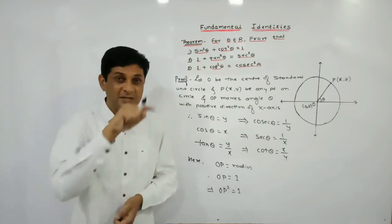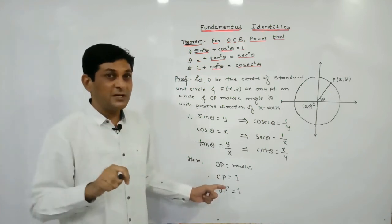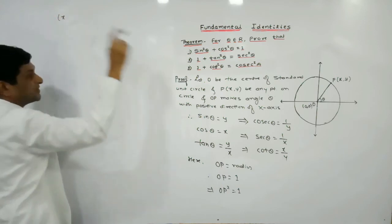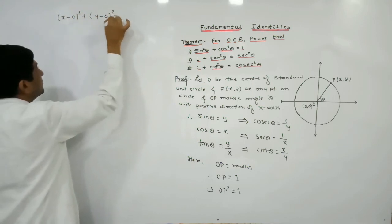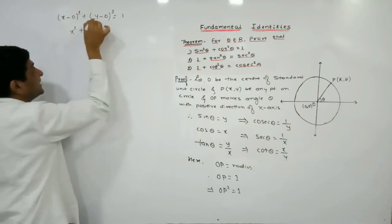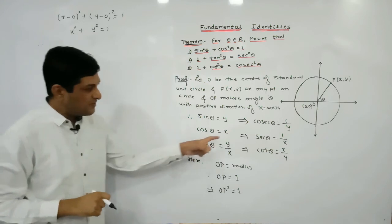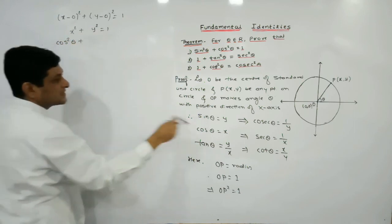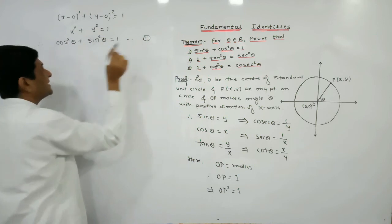Applying the distance formula: under root of (x₂ - x₁)² + (y₂ - y₁)². Since we have already squared both sides, the square root is eliminated. So OP² gives us (x - 0)² + (y - 0)² = 1, which simplifies to x² + y² = 1. Now replacing x by cos theta and y by sin theta: cos squared theta plus sin squared theta equals 1.